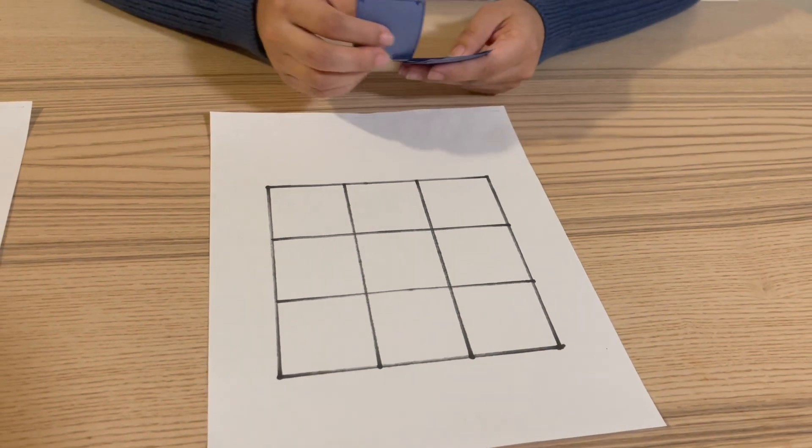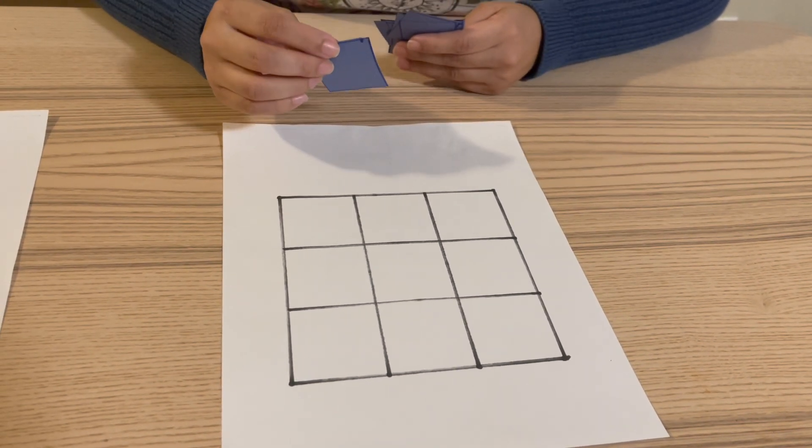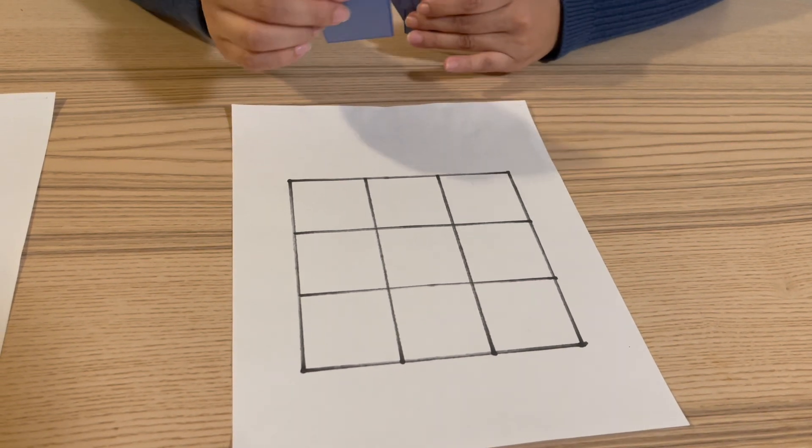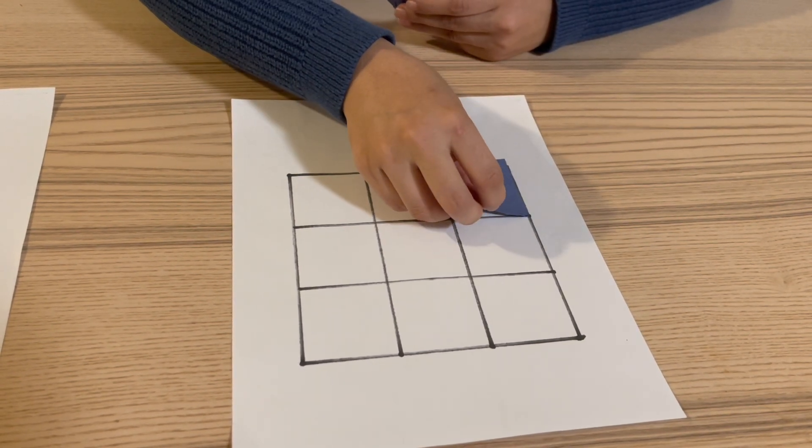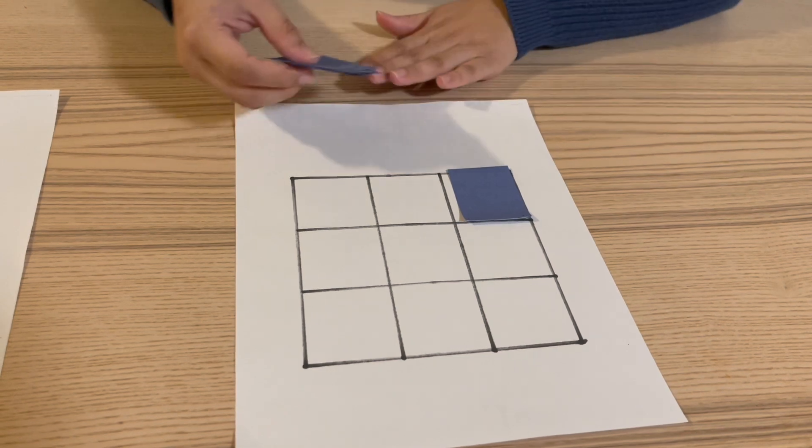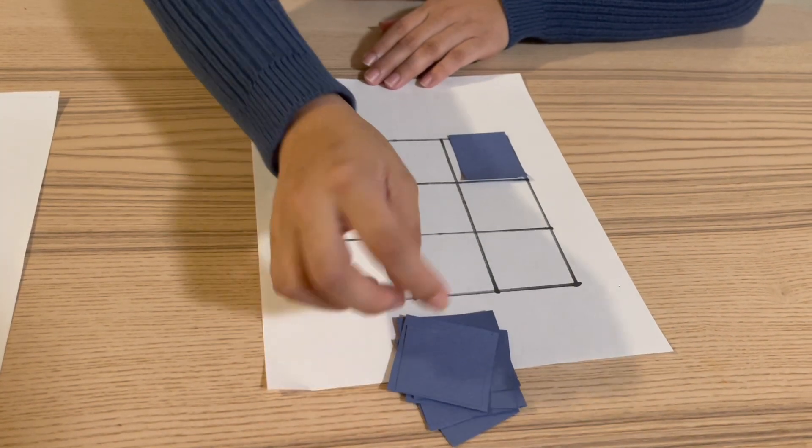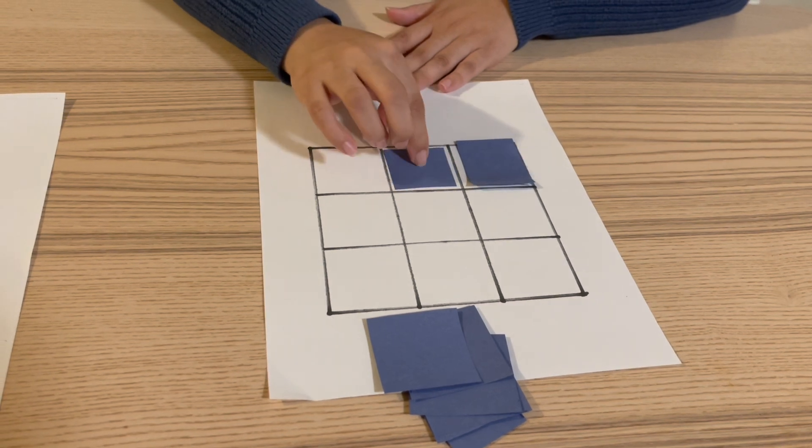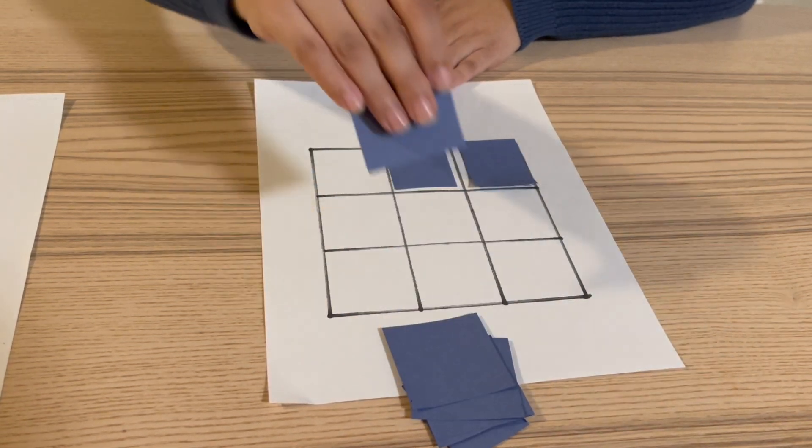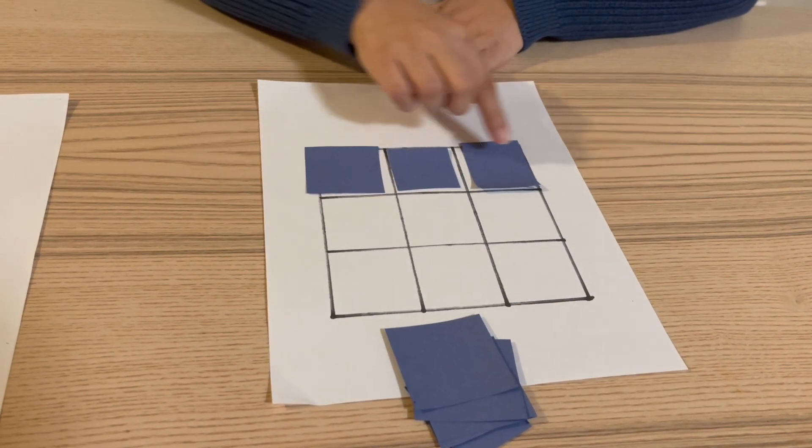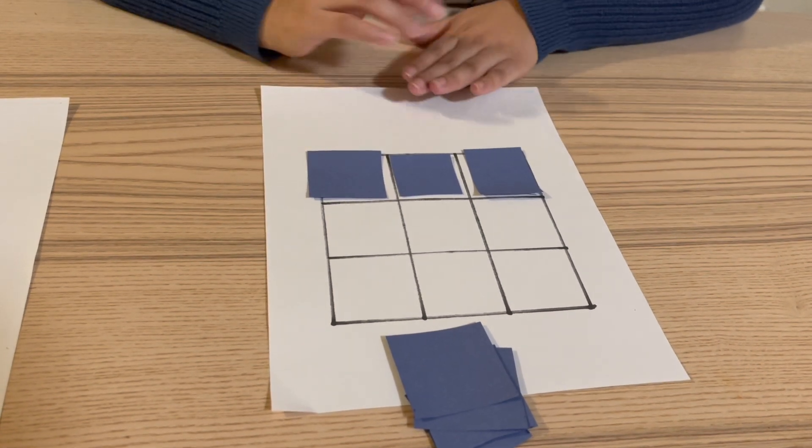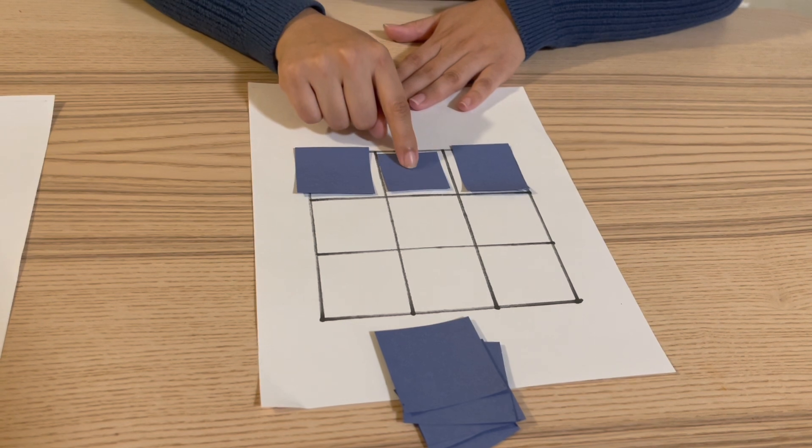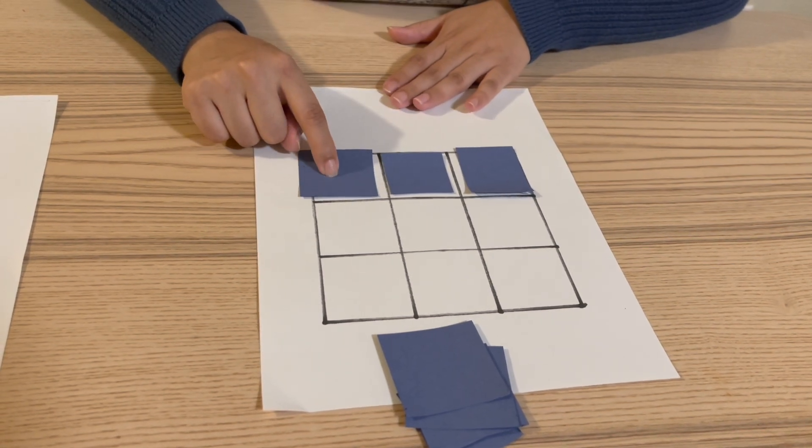We're gonna start covering the squares. I'll go first and then it'll be your turn. Put one and then give the student the squares and say it's your turn. Take turns, and when we get to three, we can stop and say, so far we have one, two, three squares.